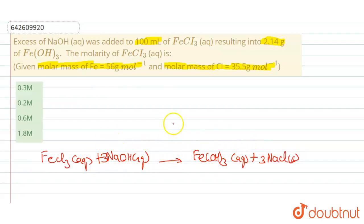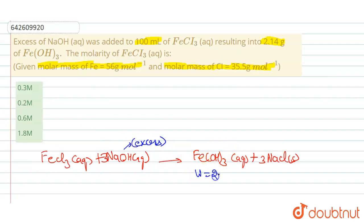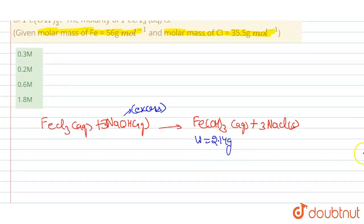Matching the atoms: Fe=1, Fe=1; Cl=3, Cl=3; Na=3, Na=3; OH=3, OH=3 — the equation is balanced. Since NaOH is present in excess, all the Fe(OH)₃ formed comes from FeCl₃, which means FeCl₃ is the limiting reagent.